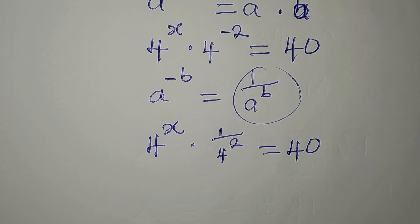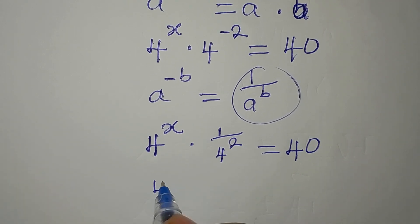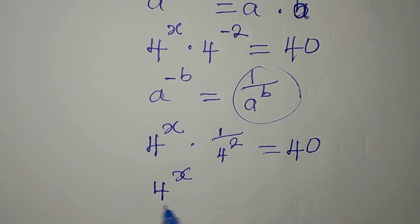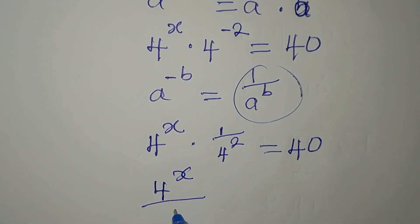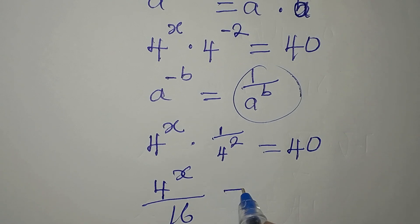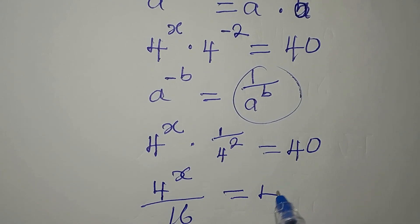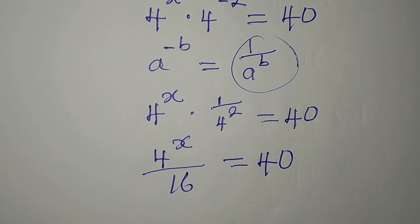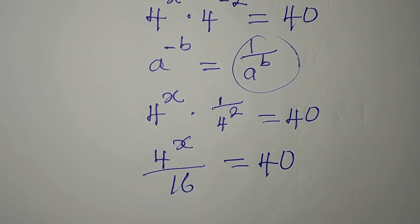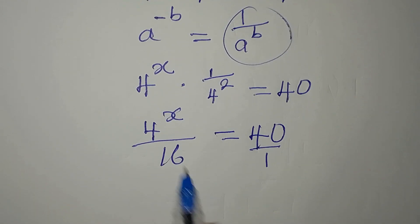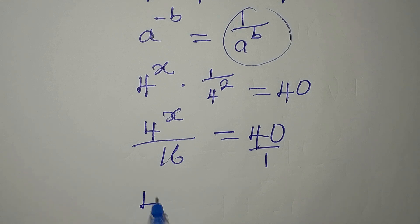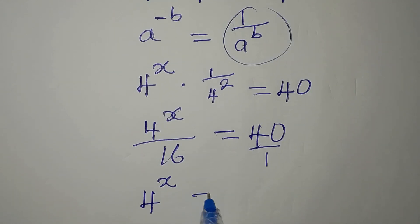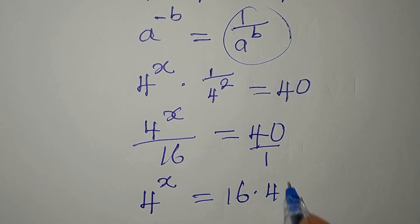This is 4 to the power of x all over 4 squared, which gives 16, and that is equal to 40. The next thing is to cross multiply, because we know that this is over 1. So I'll have 4 to the power of x times 1, then 16 multiplied by 40.